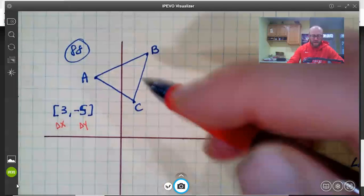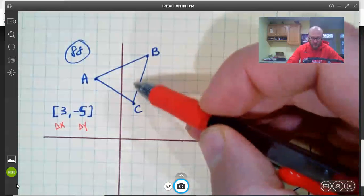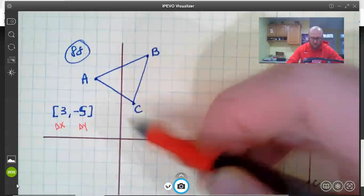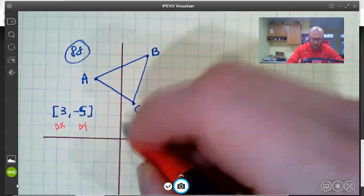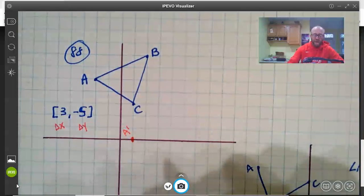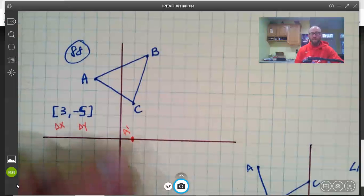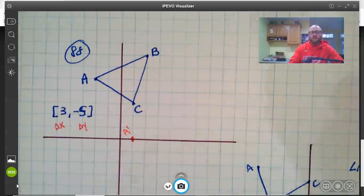So we're just going to move one point at a time. A should go one, two, three, and one, two, three, four, five down to here and we would call this point usually A prime. Once the point's been moved using the translation it's called the image of that point. This is the image of A and it's usually called A prime.